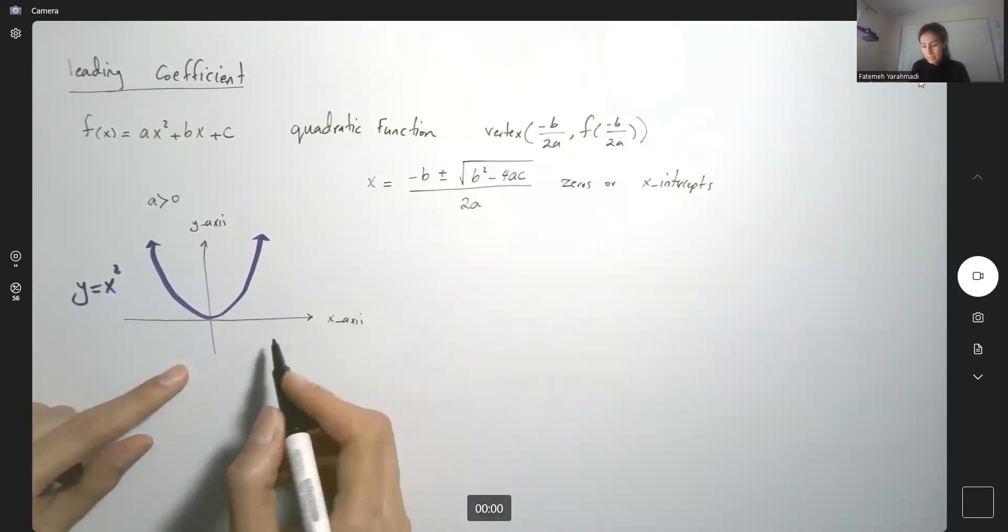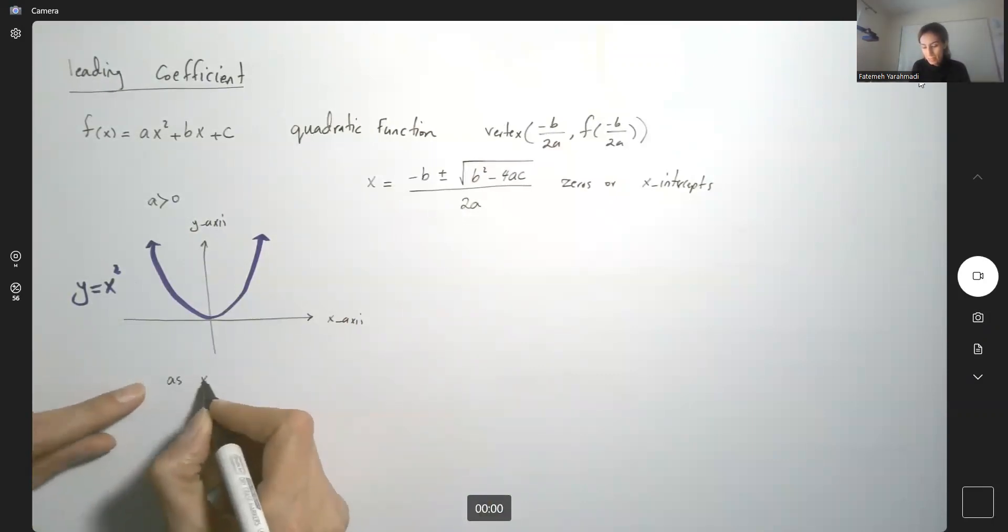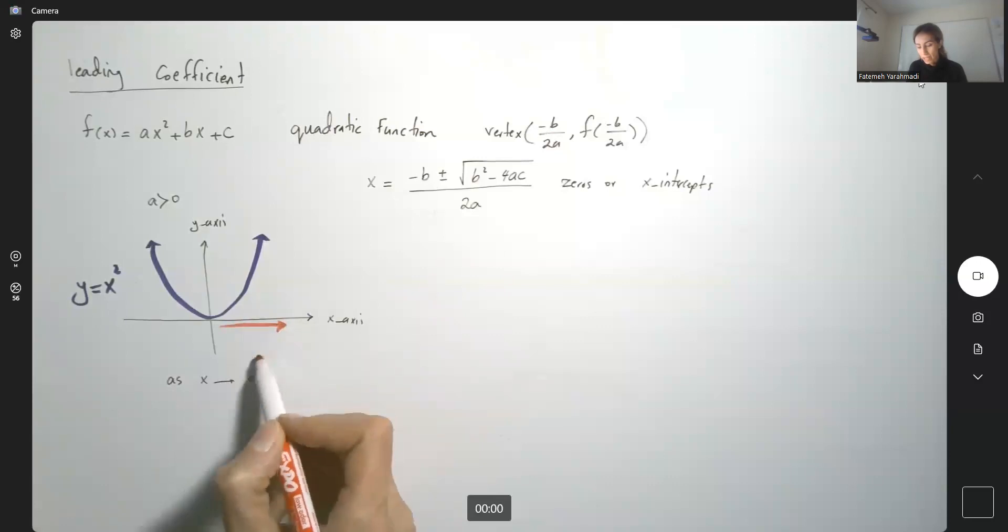As x goes to positive infinity, where does the function go? So what is the end behavior of the function? As x goes to positive infinity...